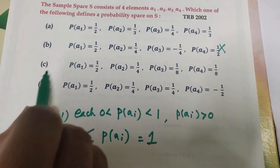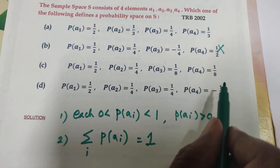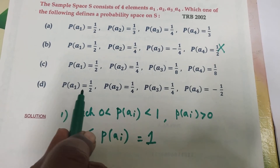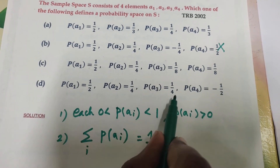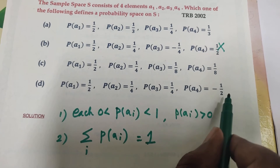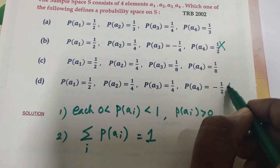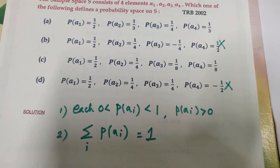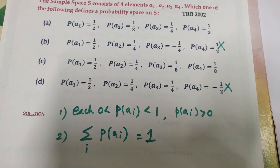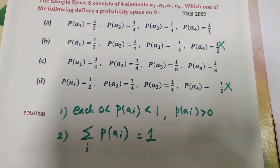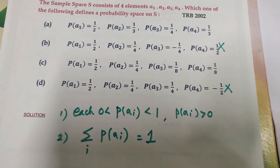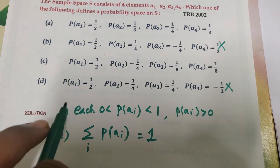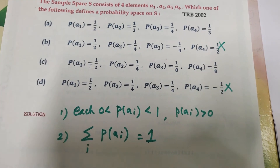If we look at option C, we look at positive values. If we look at option D: 1/2, 1/4, 1/4, -1/2 — there is a negative value here as well. So option D is also eliminated, since negative values are not allowed in a probability space.